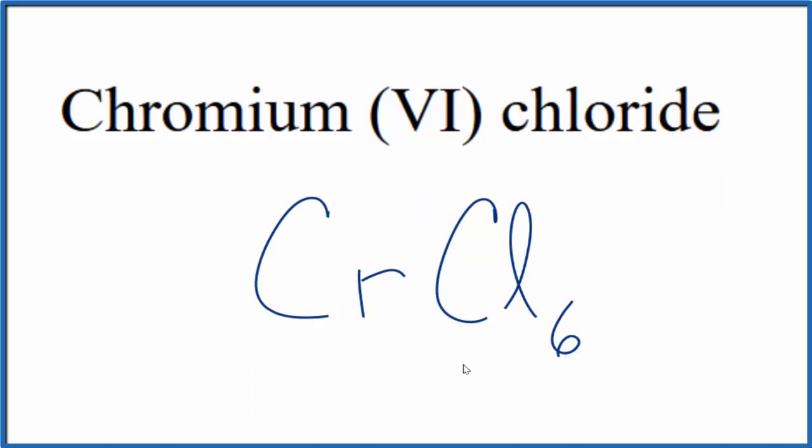If you were given the formula and asked to write the name, you'd know that the chromium would be 6 plus because the chloride ion is 1 minus and we have 6 of them, so it has to be 6 plus.